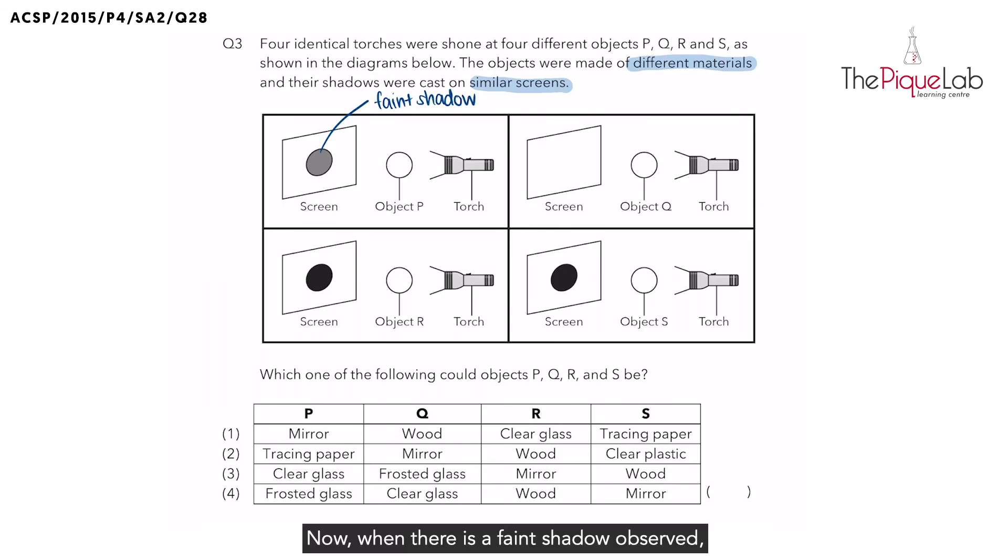When there is a faint shadow observed, it means that not all light was blocked, but some light was blocked. So in that case, what can you tell me about the transparency of object P? Is it opaque, translucent or transparent? It is translucent. So we know that object P is translucent.